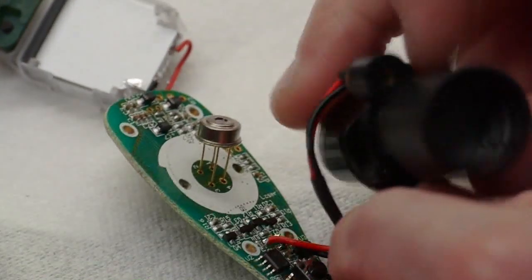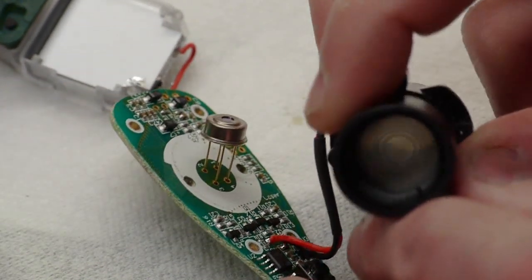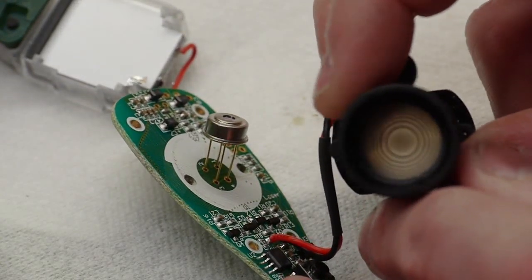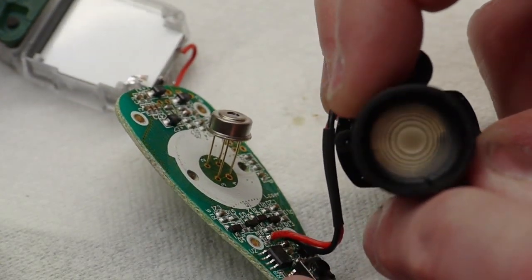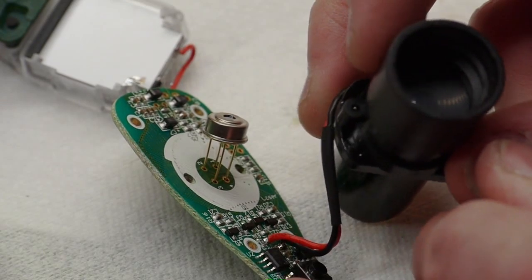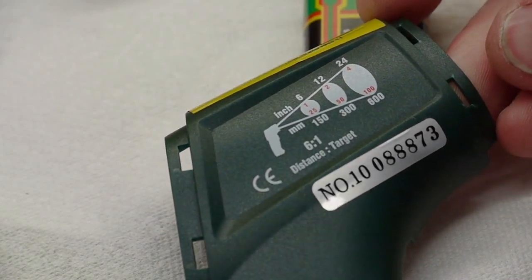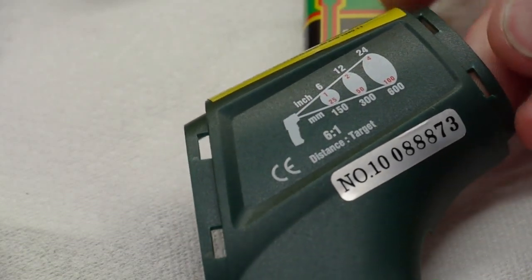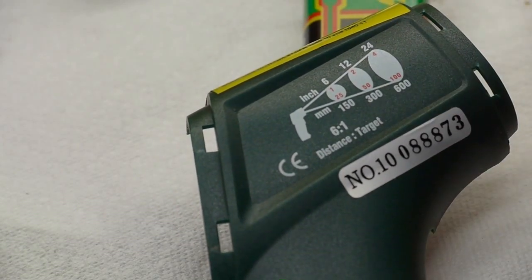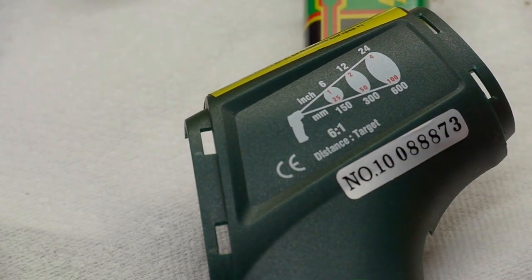Inside here, there is a polyethylene lens. It's a Fresnel lens, and this is what determines how small the spot size is that this thermometer measures. So this thermometer is a so-called 6 to 1, meaning that the target size is six times smaller than the distance from the thermometer.